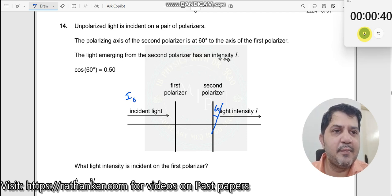The light emerging from the second polarizer has an intensity i. Then what light intensity is incident on the first polarizer? What is the value of i0?